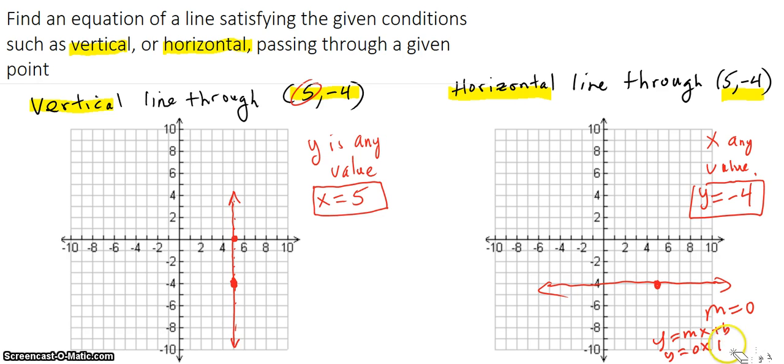I made a mistake there. So -4 is the y-intercept there, so y = -4 is the equation of this line.